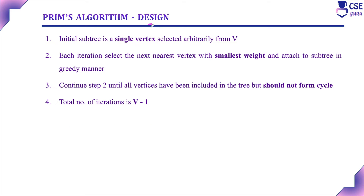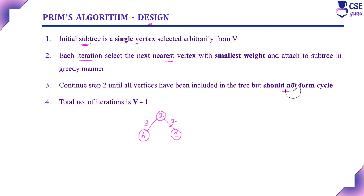Prim's algorithm design — the steps to implement Prim's algorithm. Initially, the algorithm will start with a subtree containing a single vertex. One vertex will be selected and added to the subtree; normally this is the source or starting vertex. On each iteration, the algorithm selects the nearest vertex with the smallest weight and adds it to the subtree in a greedy manner. For example, if A to B is 3 and A to C is 2, the algorithm will choose edge A to C. This procedure continues until all vertices are added to the subtree, with the main condition that it should not form a cycle.